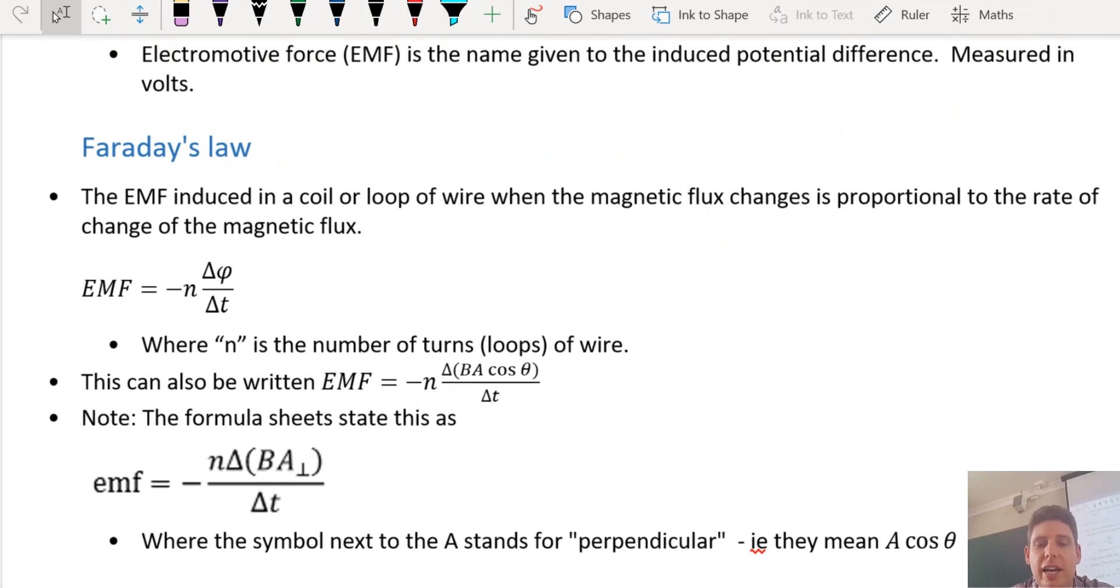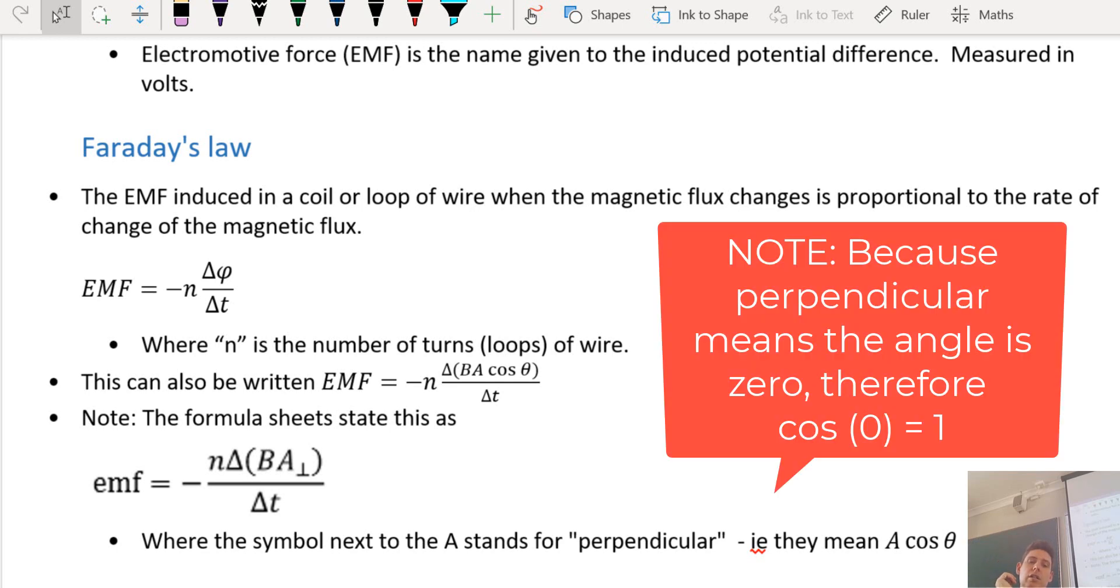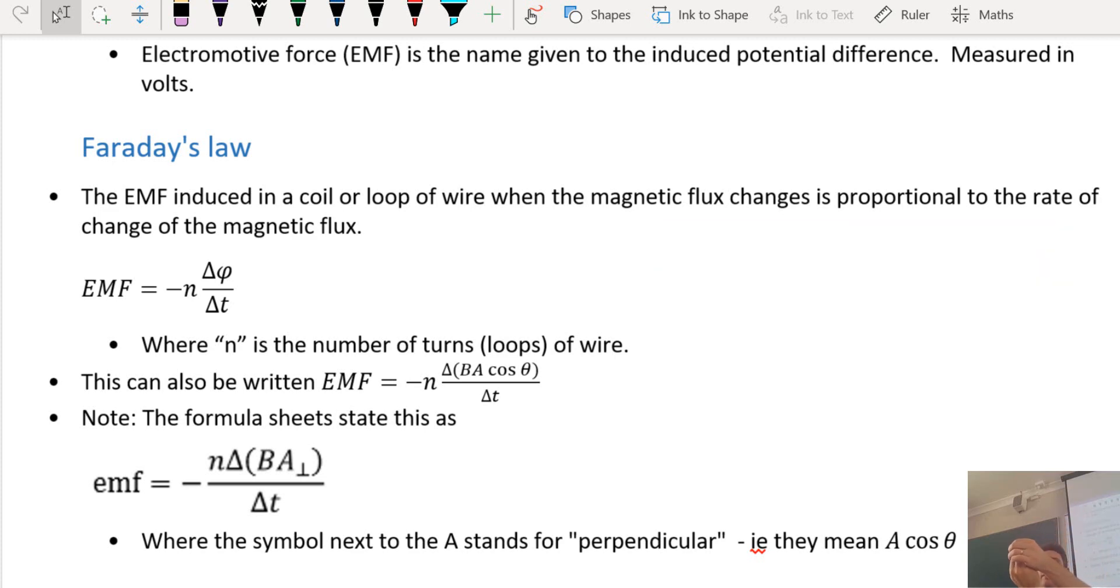The formula sheet has this formula: EMF equals negative n delta B times A perpendicular to the flow. So that's basically the area of the loop and all of the flow is passing through that loop. You've got a loop and you've got all of the flow passing through.